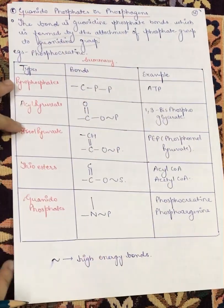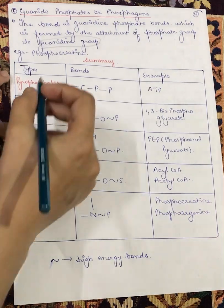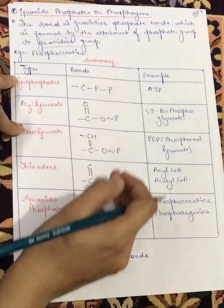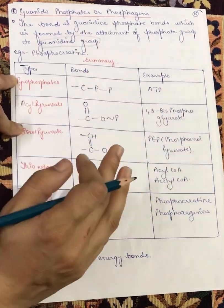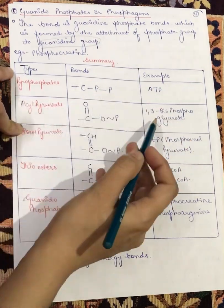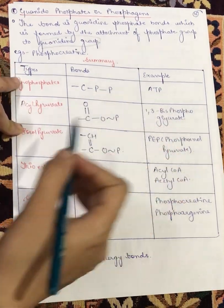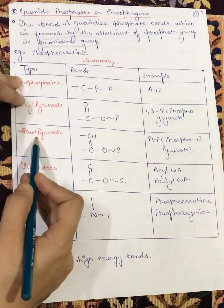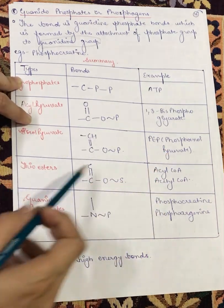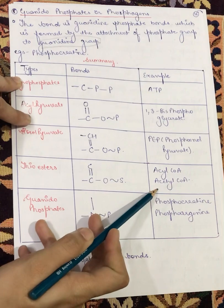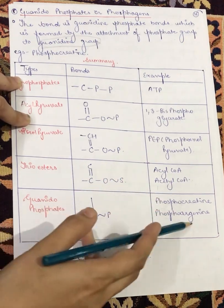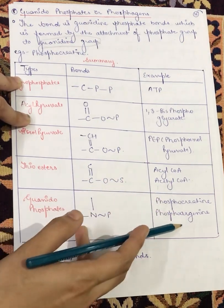This is a summary of the classification. Pyrophosphates — example: ATP. Acyl phosphates — example: 1,3-bisphosphoglycerate. Enol phosphates — example: phosphoenolpyruvate. Thiol esters — example: acetyl coenzyme A. Guanidophosphates — examples: phosphocreatine and phosphoarginine.